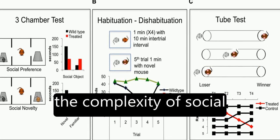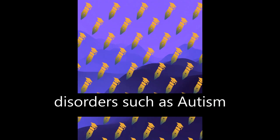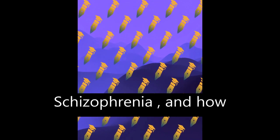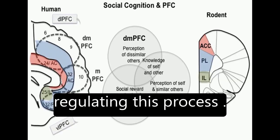The article discusses the complexity of social cognition, its disruption in psychiatric disorders such as autism spectrum disorder and schizophrenia, and how the prefrontal cortex plays a key role in regulating this process.